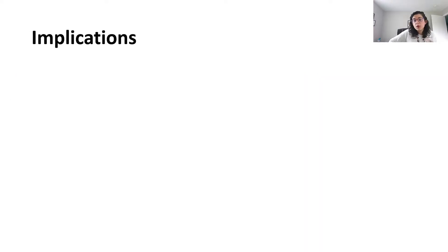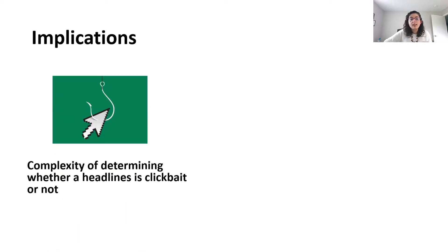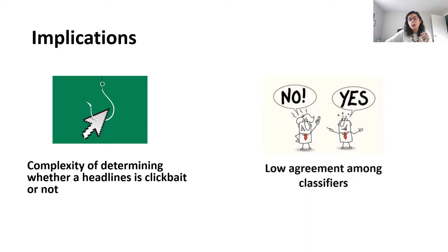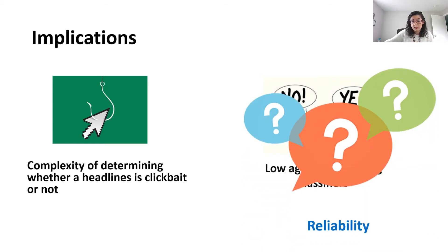So overall, our findings suggest that determining whether a headline is clickbait or not is quite complex. It does not simply depend on a few key linguistic characteristics. It also depends on the nature of the automated classifier used to distinguish clickbait from non-clickbait. A low agreement among classifiers also raised fundamental doubts about the reliability of computational clickbait detectors.